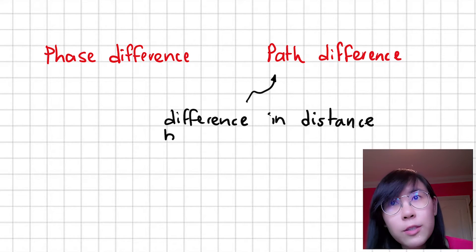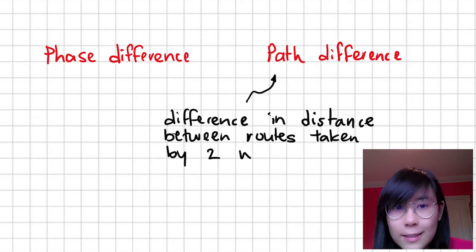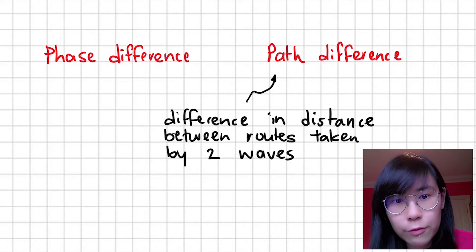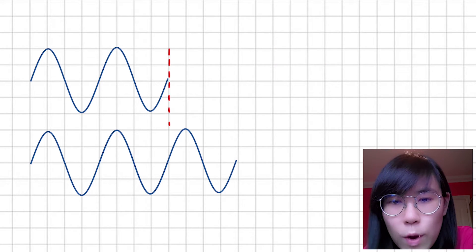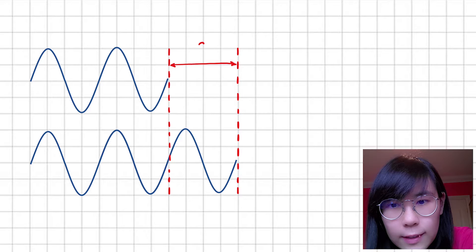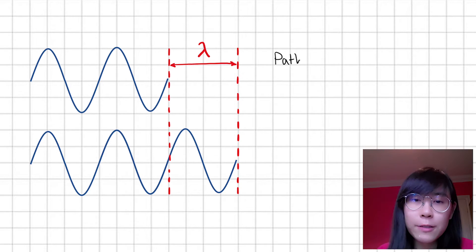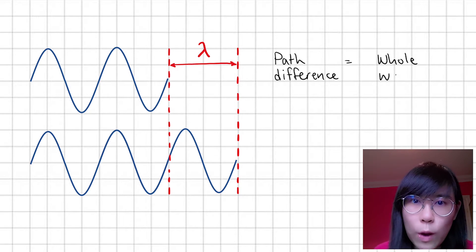Path difference describes the difference in distance between the routes taken by two waves. If we have a look at these two waves here, the bottom wave is one whole wavelength ahead of the top wave. Their path difference is therefore a whole wavelength.